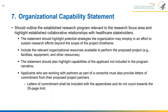Section seven, organizational capability statement, should outline the established research program relevant to the research focus area and highlight established collaborative relationships with healthcare stakeholders. It should highlight potential strategies the organization may employ to sustain research efforts beyond the project timeline, include relevant organizational resources available to perform the project such as facilities and equipment, and highlight capabilities not included in the program narrative. Applicants working with partners in a consortium must provide letters of commitment from their proposed project partners, included in the appendices and not counting toward the 35-page limit.